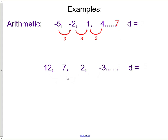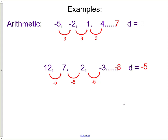In our next sequence, it goes from 12 to 7 to 2 to negative 3. Remember, the common difference is the number that they're adding each time. If I'm adding and the number is going down, I must be adding a negative. So from 12 to 7, I'm adding negative 5. From 7 to 2, I'm adding negative 5. To go from 2 to negative 3, I'm adding negative 5. So our common difference is negative 5, and our next term would be negative 3 plus negative 5, which is negative 8.